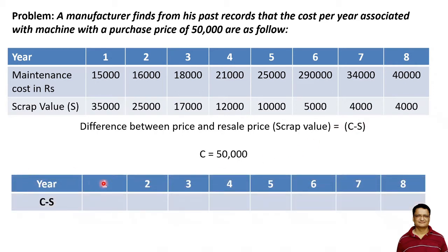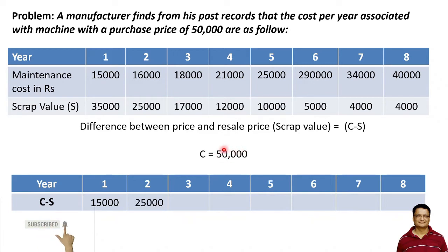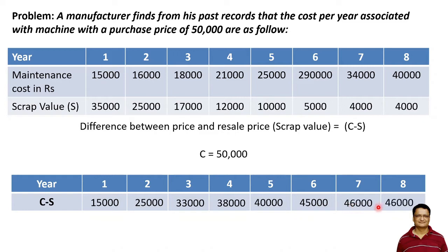For the first year it would be 50,000 minus 35,000, which gives 15,000. For the second year it will be 50,000 minus 25,000, giving 25,000. Similarly for the third year, 50,000 minus 17,000 gives 33,000. We can compute this value for the remaining years similarly. The C minus S value indicates the total investment cost — for example, if you use the machine for four years the total investment will be 38,000.